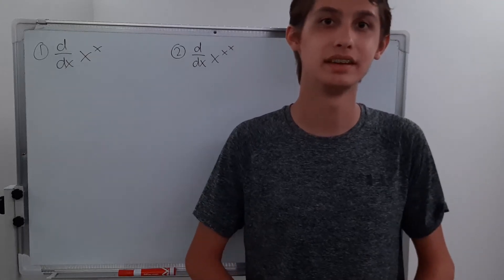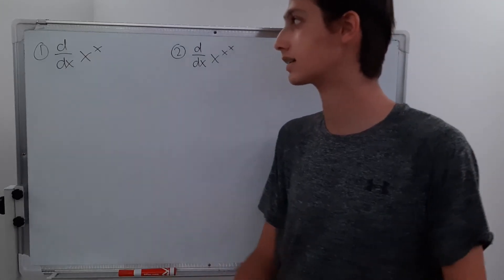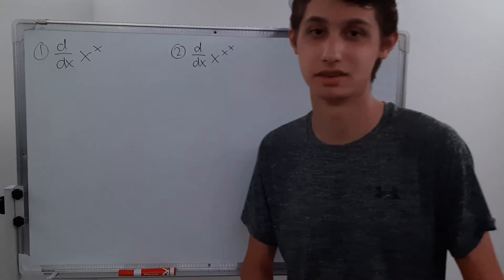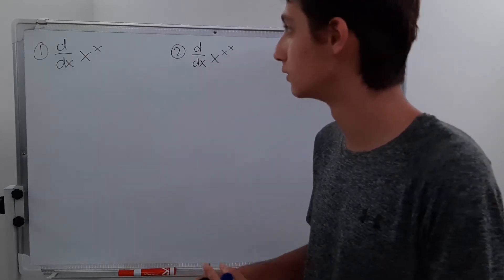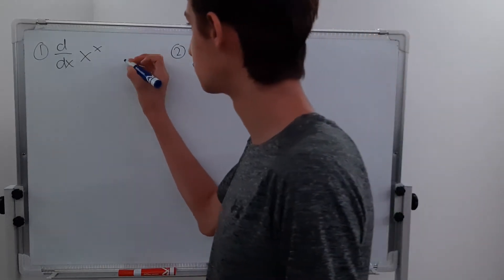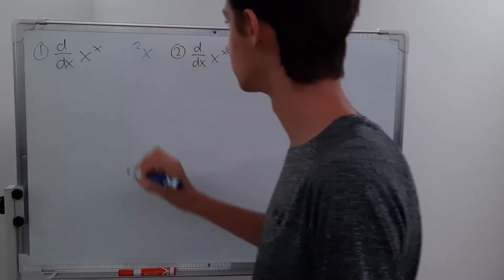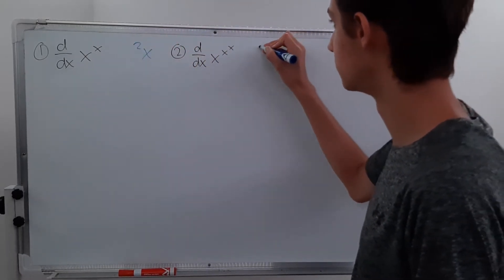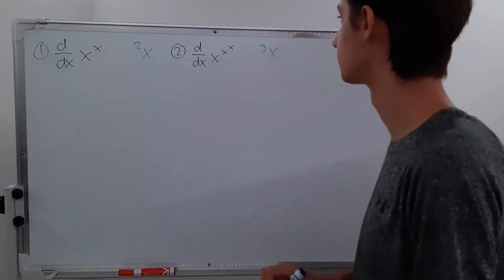Today we're going to be taking the derivatives of x to the x, and x to the x to the x. Just as a review, x to the x can be rewritten as the second tetration of x, and x to the x to the x can be rewritten as the third tetration of x.